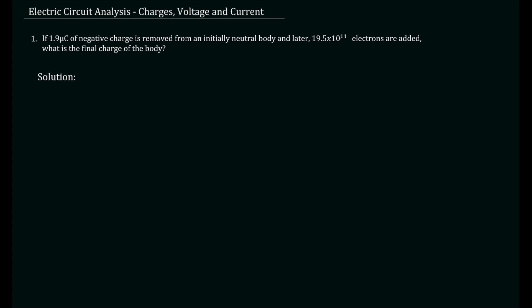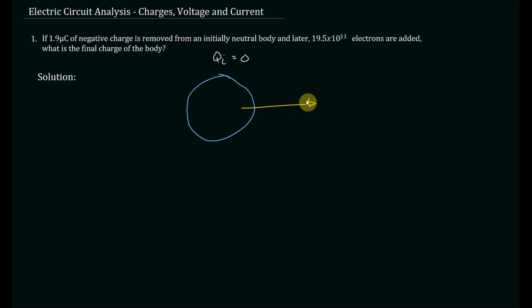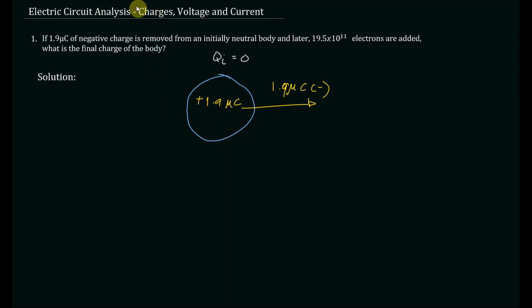The first problem: if 1.9 microcoulombs of negative charge is removed from an initially neutral body, and later 19.5 times 10 to the 11 electrons are added, what is the final charge of the body? The initial body is neutral, so the initial charge Q_i is equal to zero. When we remove 1.9 microcoulombs of negative charge from the body, the body becomes positively charged with 1.9 microcoulombs.